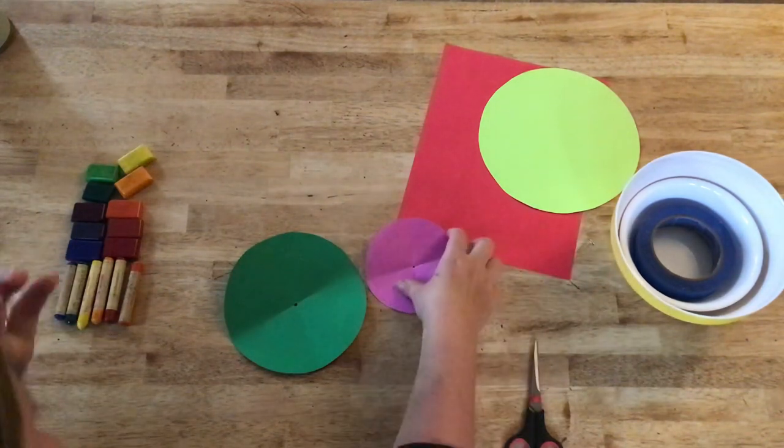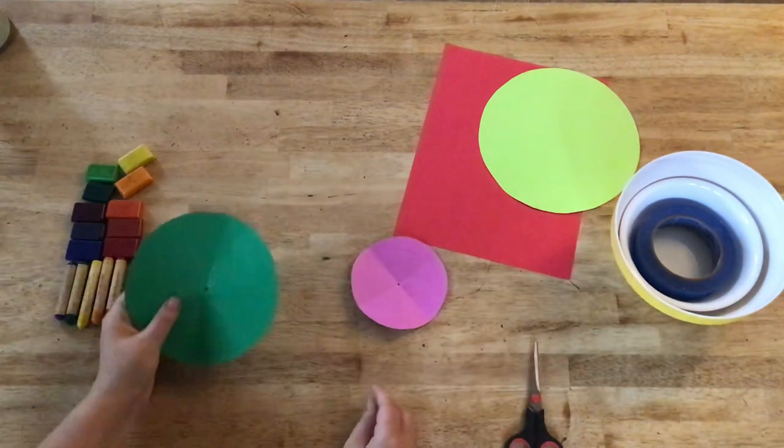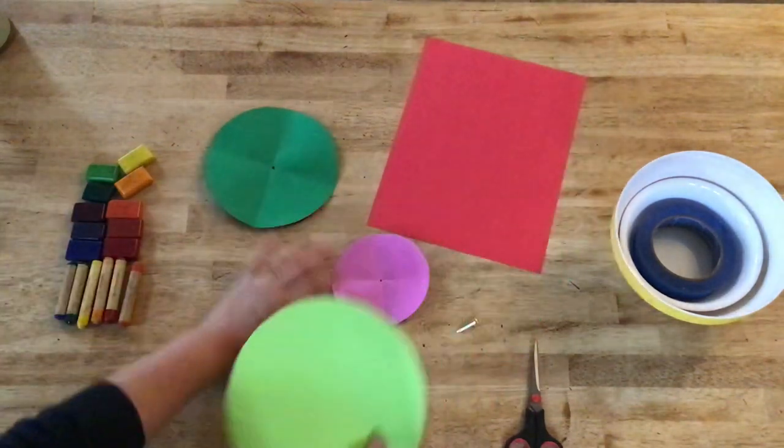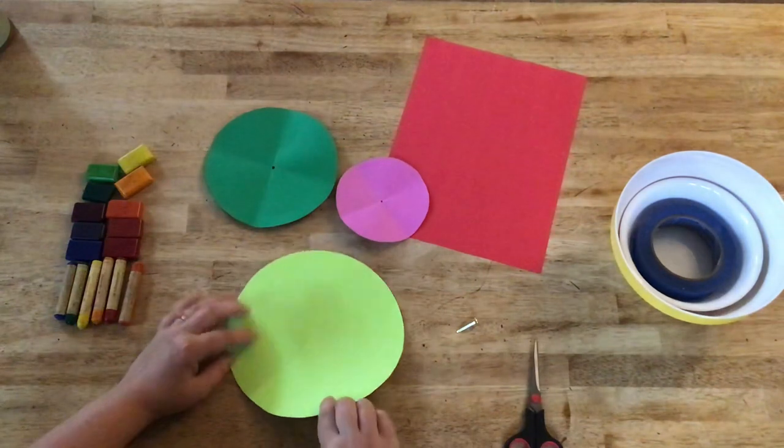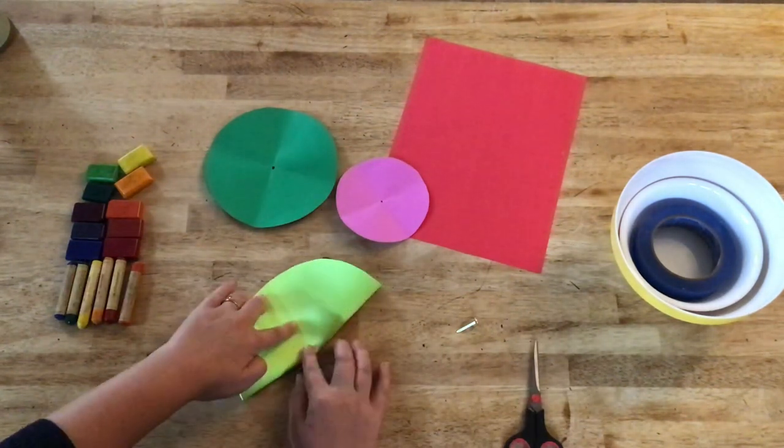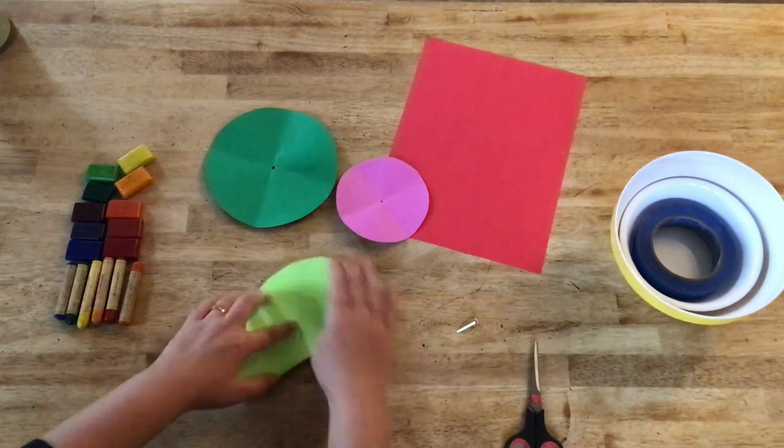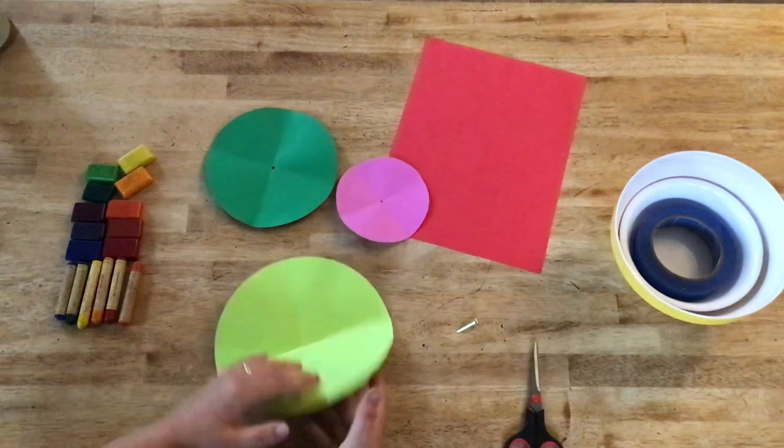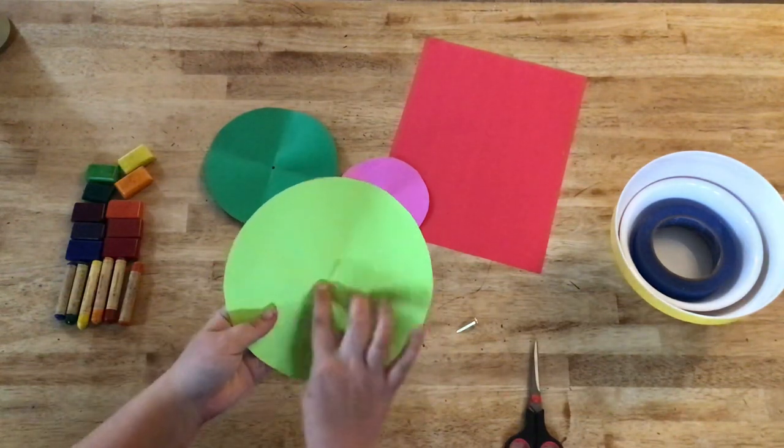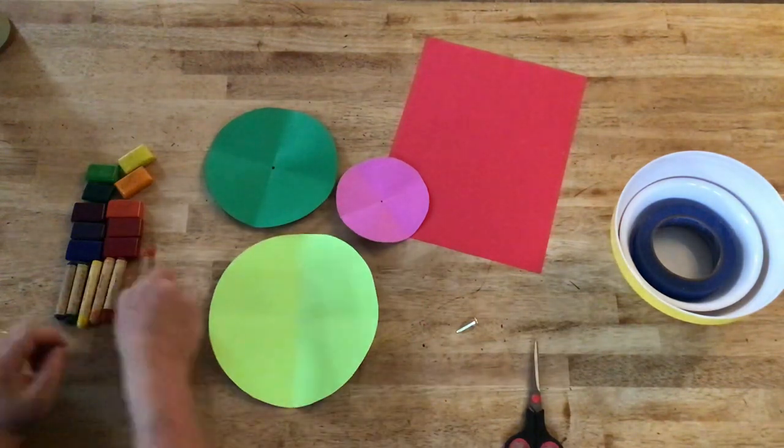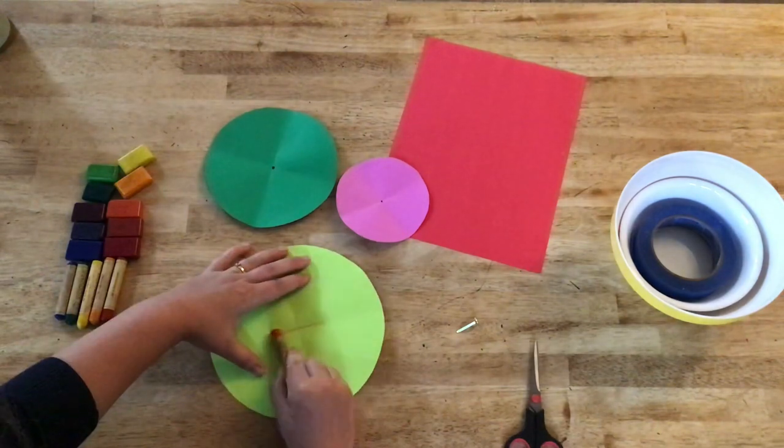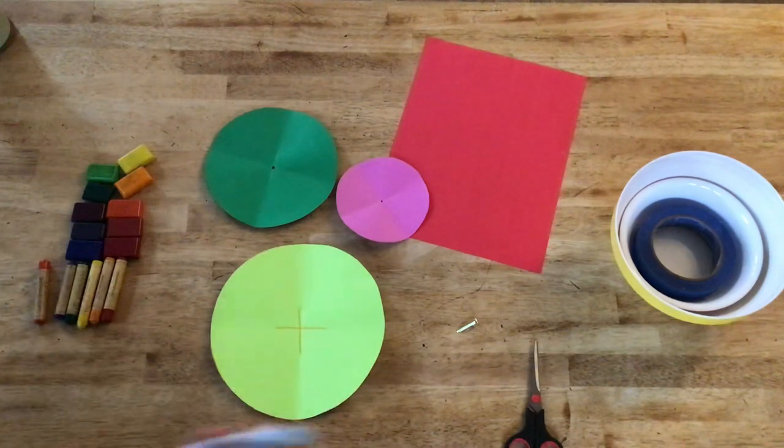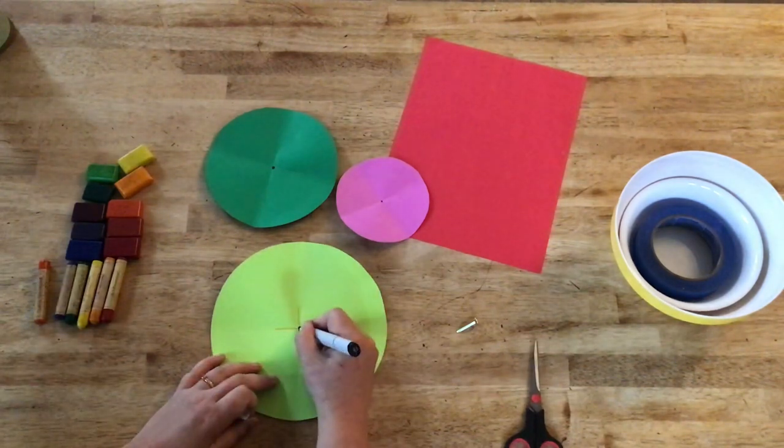So now that I have the middles of those two circles, we can actually go ahead and just do the biggest circle too. Let's be ambitious, right? So I'm going to go ahead and fold this biggest circle in the same exact way as the others, making an X. Hard to see here, but the X is right here where I fold it. And so it makes an X in the middle. And then I make a mark right in the middle.